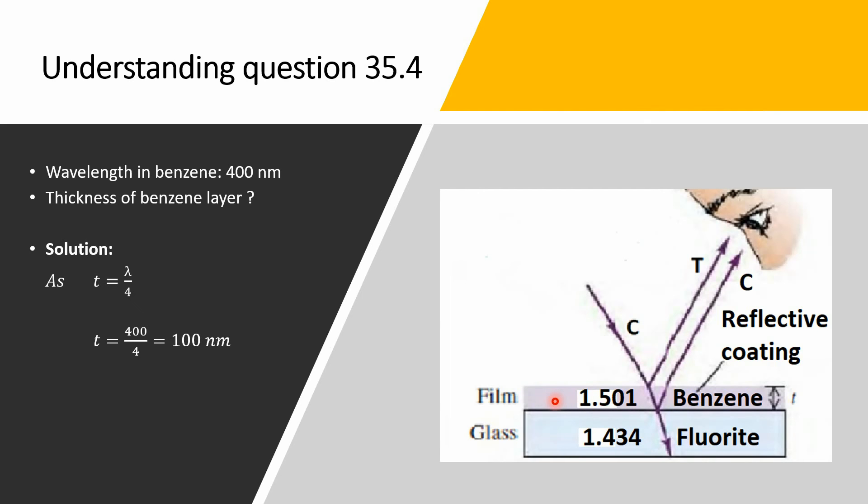This is the air medium. This is thin film. This is glass substrate. If we consider these three values: 1, 1.501, and 1.434, these three values fulfill the condition for reflective coating.